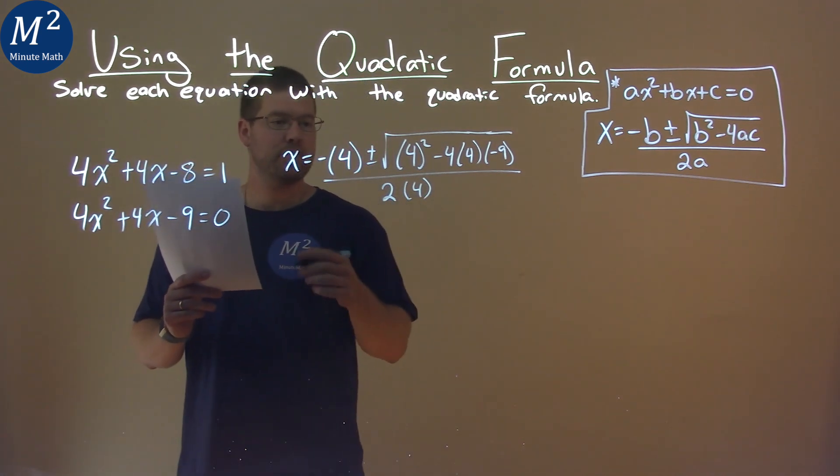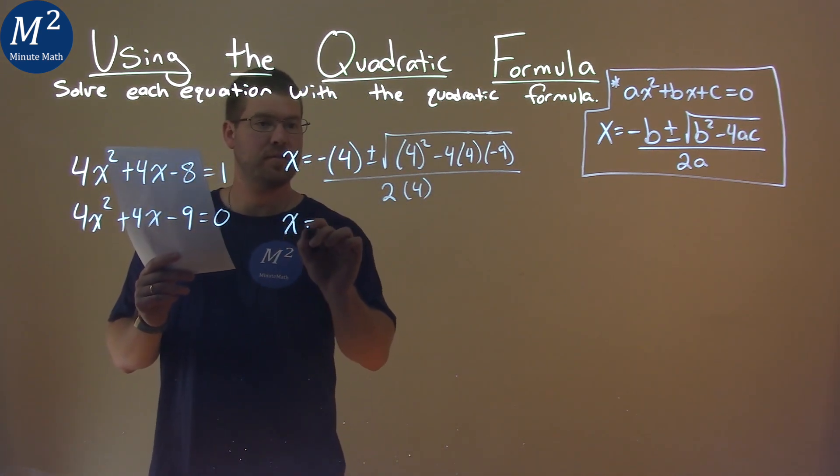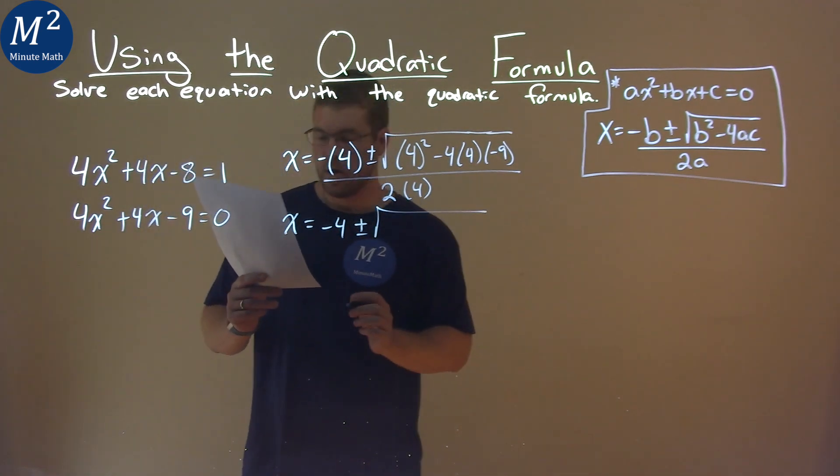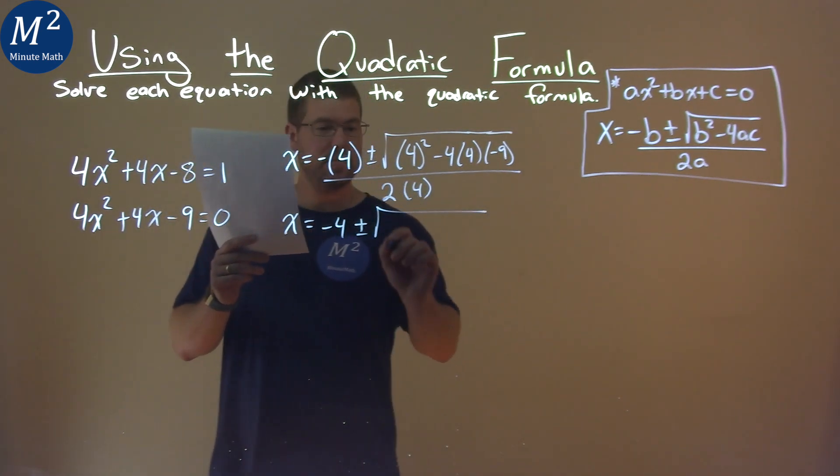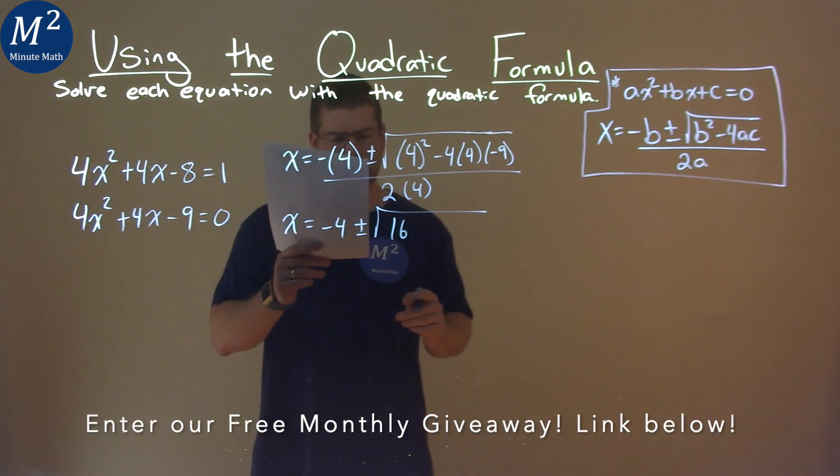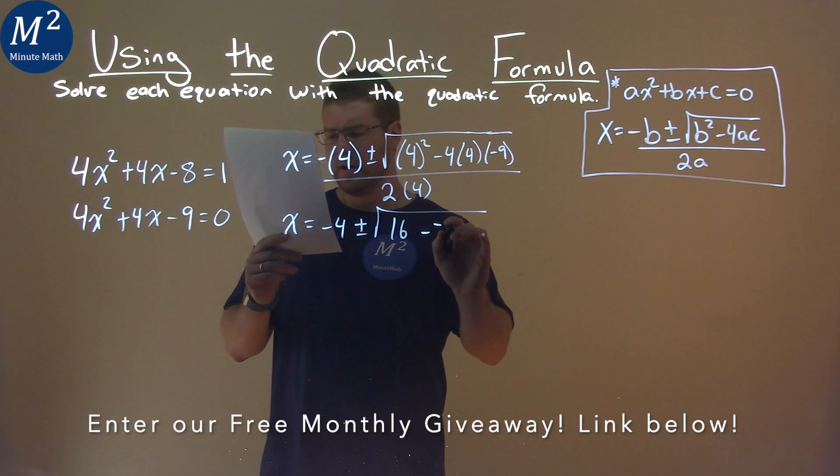So from here, we want to solve this. x equals negative 4 plus or minus the square root. 4 squared is 16, and then 4 times 4 times negative 9 is negative 144.